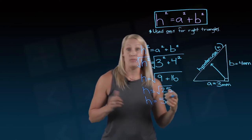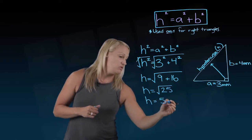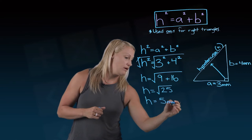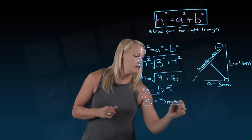And once I've added those together, I can take the square root of 25, which you probably know is 5. And if these two were in millimeters, these lists would be in millimeters as well. So let's put that there.